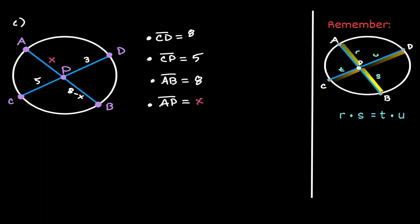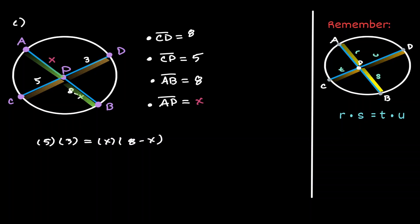Now that we have reached this point, we can use the same property. If we multiply the segments of chord CD — 5 times 3 — that is going to be equal to the multiplication of the segments of chord AB: x times (8 minus x). Multiplying the left-hand side gives us 15. On the right-hand side, distributing x gives us 8x, and distributing to the negative x gives us negative x squared.